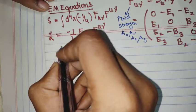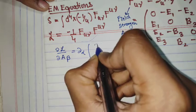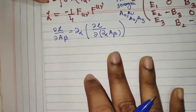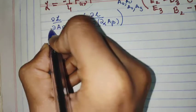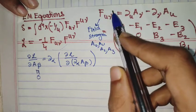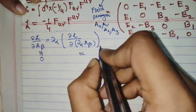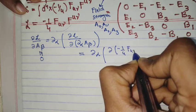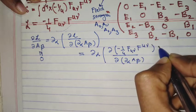The equations of motion for the fields are written as ∂L/∂A_β = ∂_α (∂L/∂(∂_α A_β)). Now ∂L/∂A_β is zero because there is no direct dependence on A_β — F_μν is an antisymmetric tensor and it depends only on the derivatives. So the equation reduces to ∂_α of ∂(−¼ F_μν F^μν)/∂(∂_α A_β) = 0.